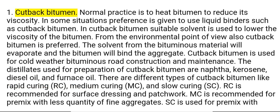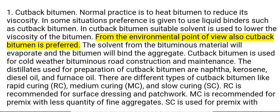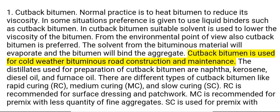Different forms of bitumen. 1. Cutback Bitumen. Normal practice is to heat bitumen to reduce its viscosity. In some situations, preference is given to use liquid binders such as cutback bitumen. In cutback bitumen, a suitable solvent is used to lower the viscosity of the bitumen. From the environmental point of view, cutback bitumen is preferred. The solvent from the bituminous material will evaporate and the bitumen will bind the aggregate. Cutback bitumen is used for cold weather bituminous road construction and maintenance. The distillates used for preparation of cutback bitumen are naphtha,